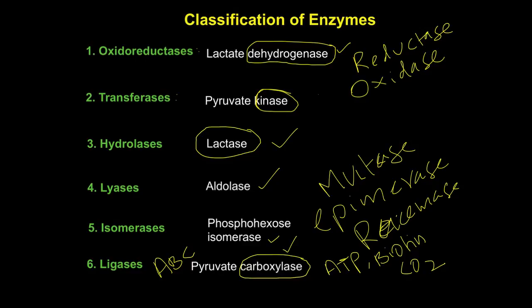To review: oxidoreductases catalyze oxidation-reduction reactions and their surname is dehydrogenase, reductase, or oxidase. Transferases transfer a functional group and end as kinase. Hydrolases are digestive enzymes that add water and break compounds. Lyases break compounds without adding water by inserting double bonds. Isomerases end as isomerase, mutase, epimerase, or racemase. Ligases join two compounds and need ATP, biotin, and carbon dioxide — ending as carboxylase.